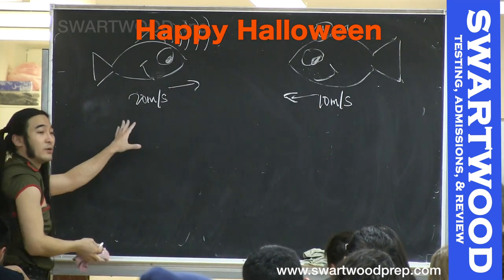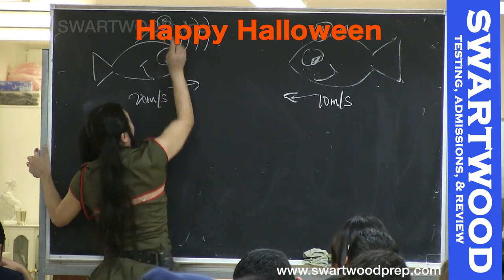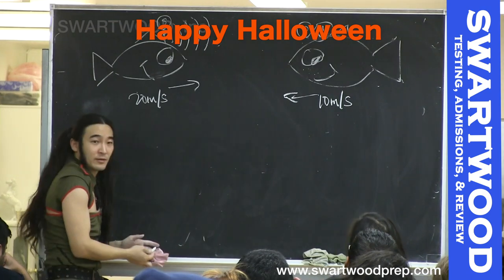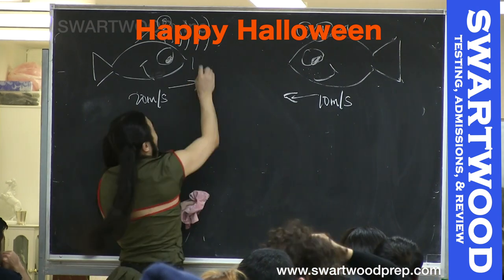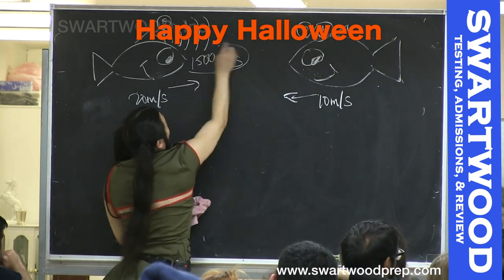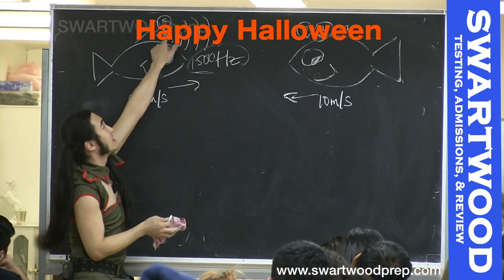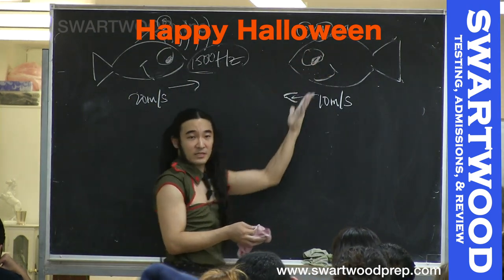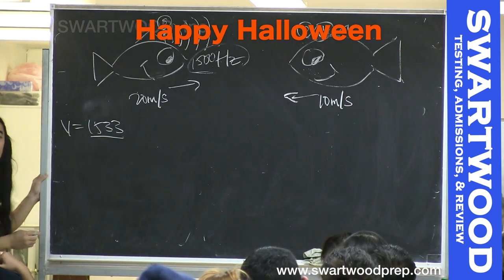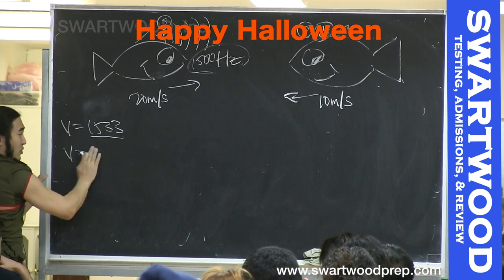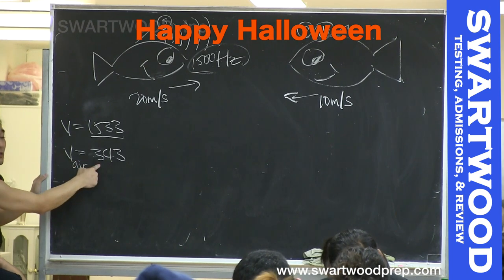This might seem like an easy example, but if you understand this approach you can do any Doppler problem. I'll call this one the source — because the sound is coming from it — and you are the object, because you're picking up the sound. If the frequency from the source is 1500 Hz, what frequency are you going to hear? They'll give you the speed of sound in water — it's 1533 m/s. For comparison, the speed of sound in air is about 343 m/s, so you can see sound travels much faster in water than in air.